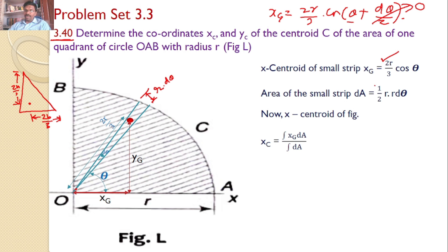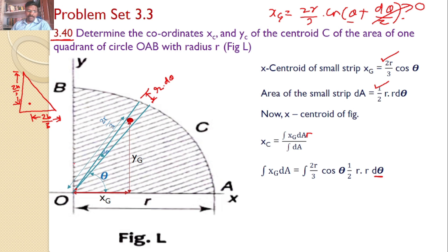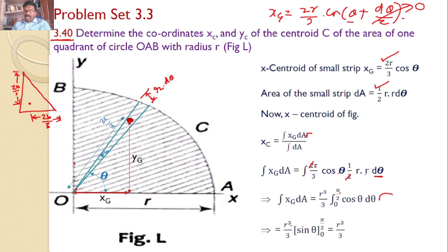We know the meaning of xg and dA, so let us calculate them individually. First, calculate the numerator: integral of xg·dA, where xg equals 2R by 3 into cos theta, and dA becomes ½·R·R·d theta. The theta limits vary from 0 to pi by 2 because it is a quarter circle. So integral xg·dA equals the integral from 0 to pi/2, taking constant terms: R squared and another R gives R cubed, and the 2 cancels. So you get R cubed by 3 times the integral from 0 to pi/2 of cos theta·d theta. Integration of cos theta gives sin theta, so you get R cubed by 3 times sin theta evaluated from 0 to pi/2, giving integral xg·dA equal to R cubed by 3.